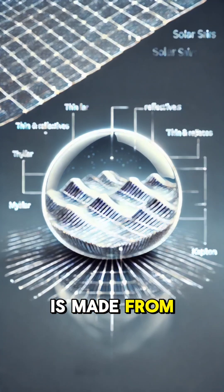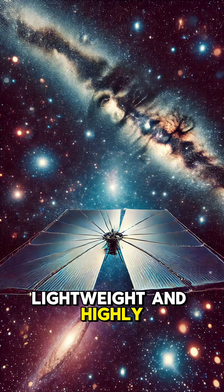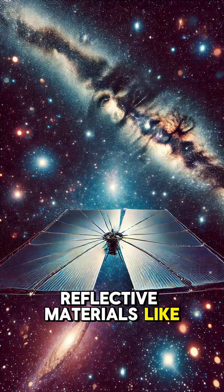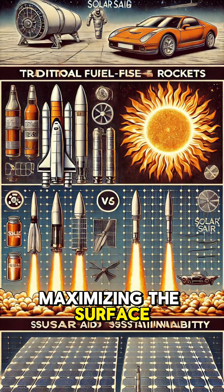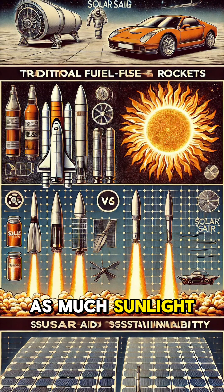The sail itself is made from ultra-thin, lightweight, and highly reflective materials, like Mylar or Kapton. These sails can be incredibly large, maximizing the surface area to capture as much sunlight as possible.